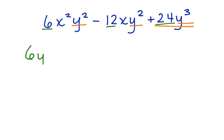So now we have 6y squared. Let's take 6y squared out of the first term. We're left with x squared only. Take it out of the second term.